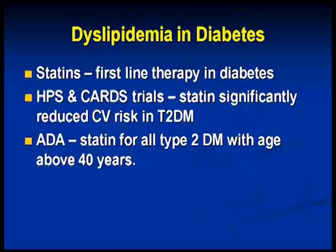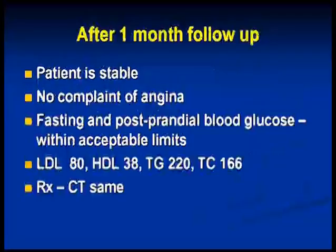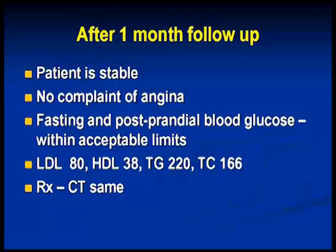ADA tells us we should give statins for all type 2 diabetics above the age of 40. A month later, the patient is stable with no features of angina. Fasting and postprandial blood glucose values are within acceptable limits. The LDL is down to 80 — we could still bring it lower. HDL is 38, triglycerides have gone up, and total cholesterol is almost within normal range. The same treatment is continued.